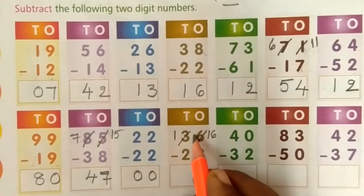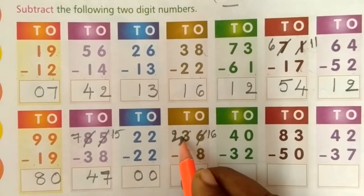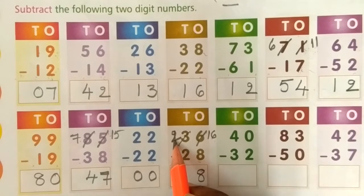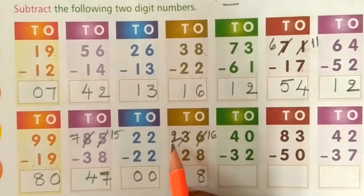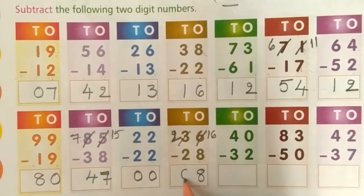Here, 3 minus 1. Together: take 2 fingers, close 2 fingers. Answer is 0.